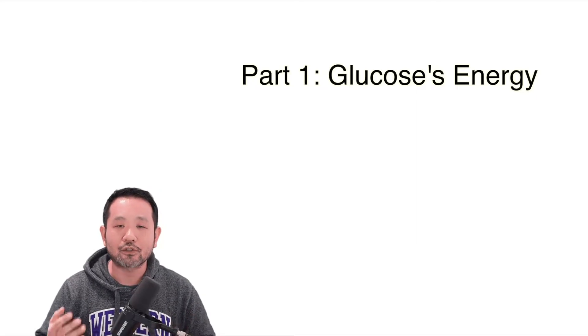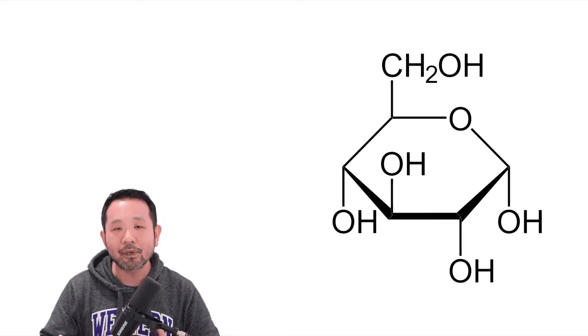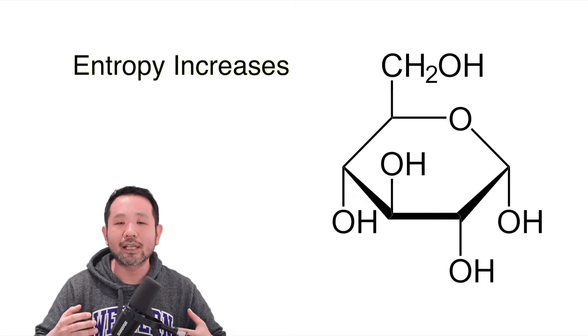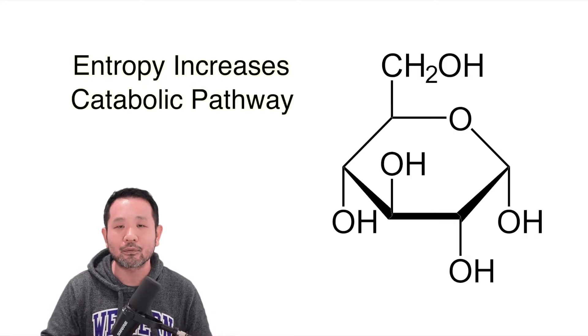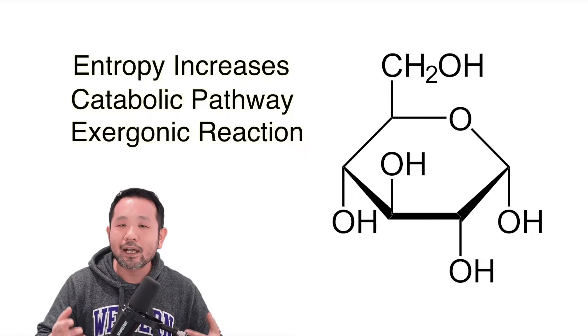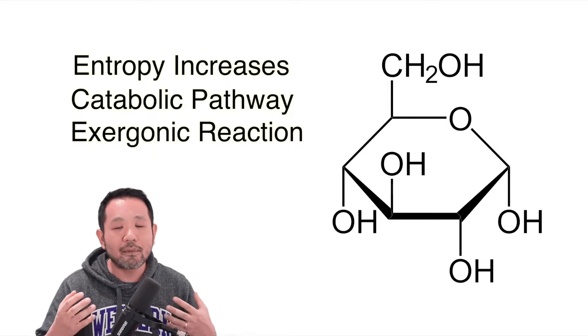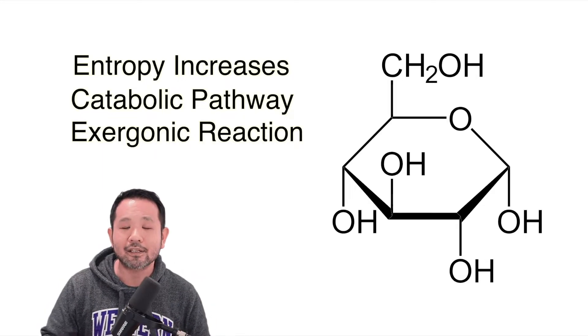If you remember back when we talked about Chapter 8 and the idea of complexity and simplicity, we can think of glucose as a relatively complex molecule, and that is where the energy of glucose might lie. Because when complex things become simpler, entropy in the system increases, which is related to catabolic pathways and exergonic reactions — we can say that when complex things become simpler, we release energy.